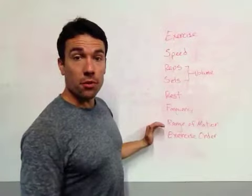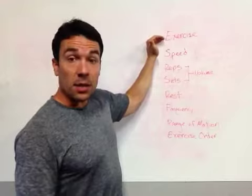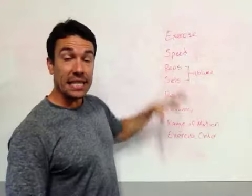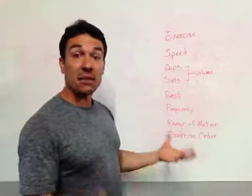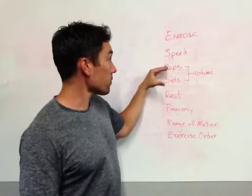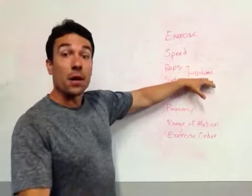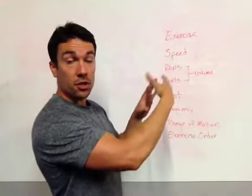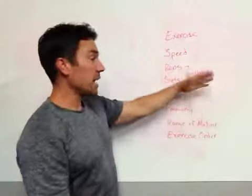Here are the variables we can change. If we're training legs, we can do a leg press, leg extension, squats — back squats, front squats, overhead squats — all of which create a slightly different stress on your legs because the load is held in a slightly different way. We can change the speed — fast, slow, medium. We can change reps and sets. Overall, reps and sets make up our training volume: the total number of reps done for a given exercise, or cumulatively across all sets for a muscle group.